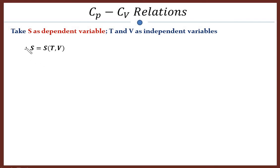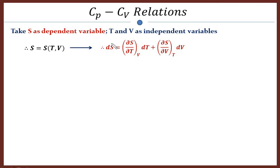Now knowing S is a function of temperature and volume, we can write the change in S. The change in S is given by dS equals (∂S/∂T) at constant volume times dT, plus (∂S/∂V) at constant temperature times dV. This relation says that change in entropy equals change in entropy due to change in temperature when volume is constant, plus change in entropy due to change in volume when temperature is constant.